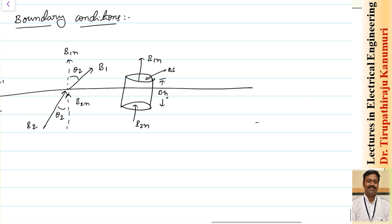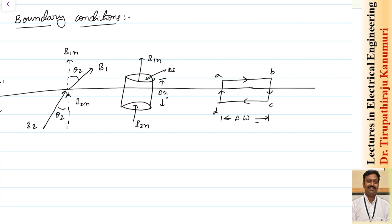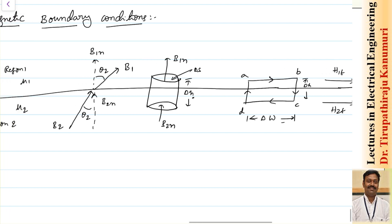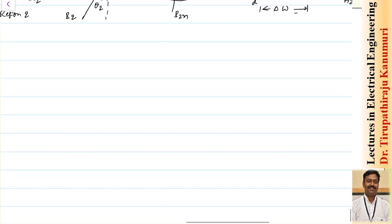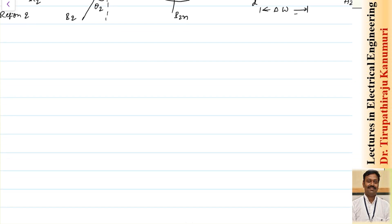To calculate the tangential component, we take a rectangular loop ABCD. The width of this rectangular loop is delta W and the height is delta H. As delta H tends to zero, the height can be neglected, giving us the tangential component. We identify B1T, H1T, and H2T. Also, let us assume this boundary has a surface current density of some value K amperes per meter.